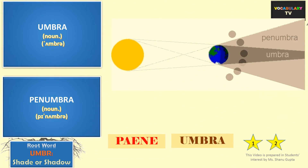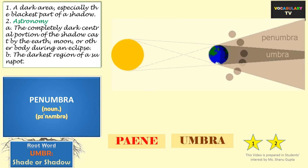The root Umbra itself is a proper word in English. Used as an astronomical term, the notion of Umbra is important in considering eclipses, where the word refers to the completely dark portion of the shadow cast by the earth, moon, or other body during an eclipse. The word can also refer to the darkest region of a sunspot, or more generally, any dark area — especially the blackest part of a shadow.